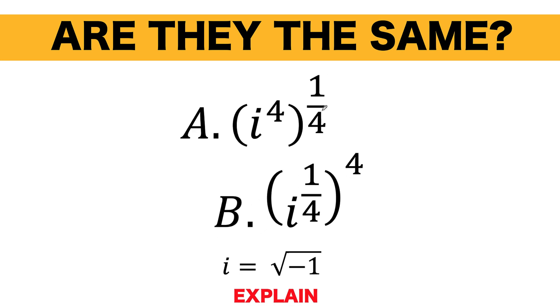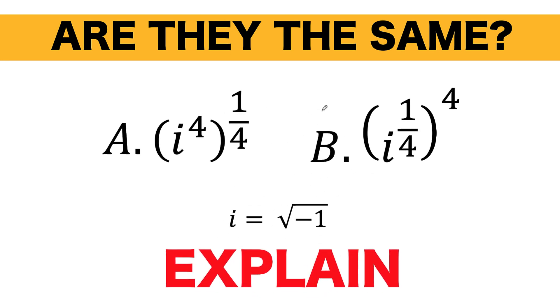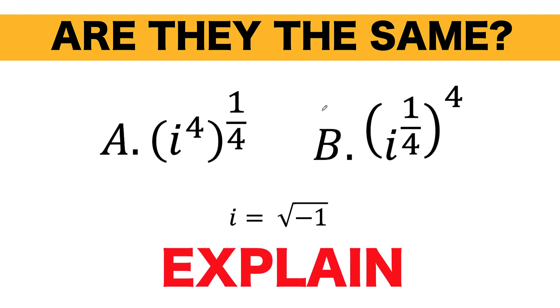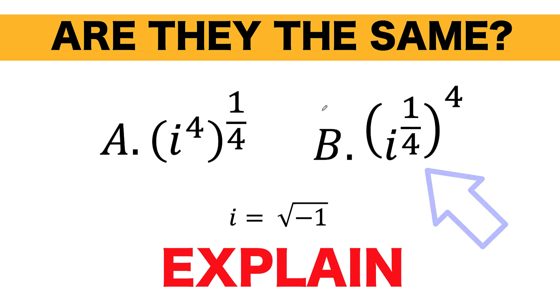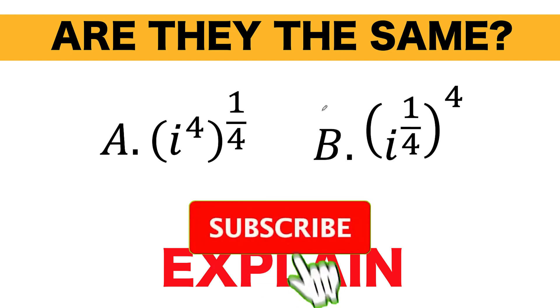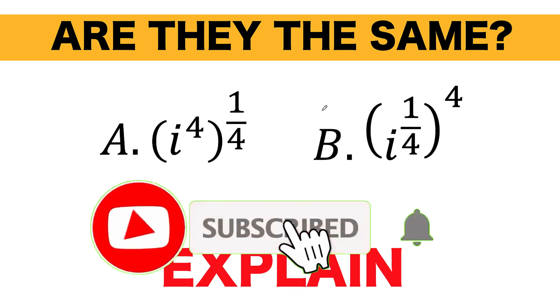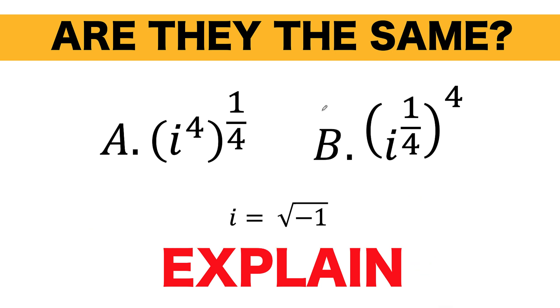Here's our math problem for today. We are given two complex numbers. Letter A: the imaginary unit i raised to the fourth, all raised to one fourth. Letter B: the imaginary unit i raised to one fourth, all raised to the fourth. Are these two expressions the same? You can pause the video and analyze if these two complex numbers are the same.